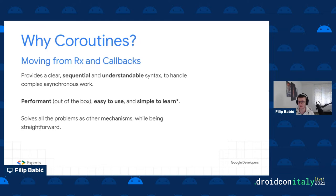Coroutines are not as simple internally, but they are much simpler than RxJava. They are very well integrated into the Android ecosystem and very easy to start using. It's very hard to accidentally block or freeze threads, because the way coroutines work is specifically designed to avoid that. They solve all the problems that RxJava and callbacks solve while still being very straightforward.